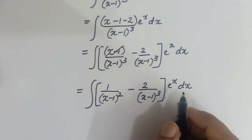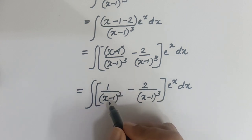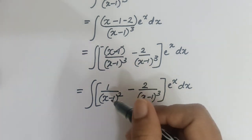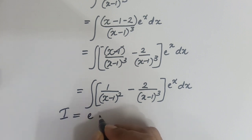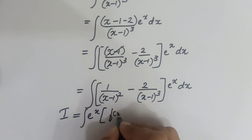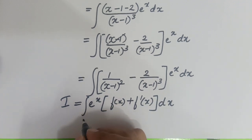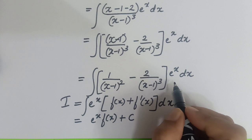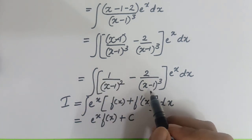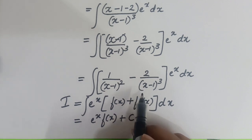Whenever you see the e raised to x term, try to write it such that one function is f(x) and the other is f'(x), the derivative of that function. The formula is: if I equals the integral of e raised to x times [f(x) plus f'(x)] dx, then this equals e raised to x times f(x) plus C. We need to identify which term is f(x) and which is f'(x).